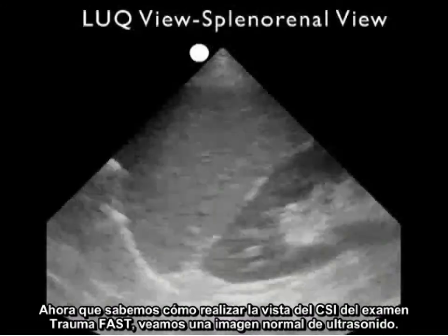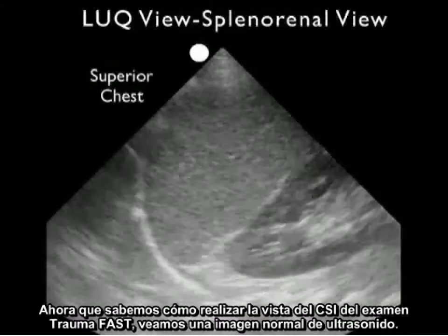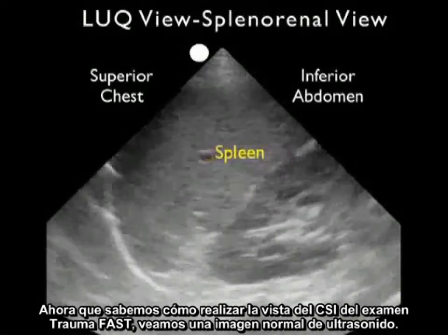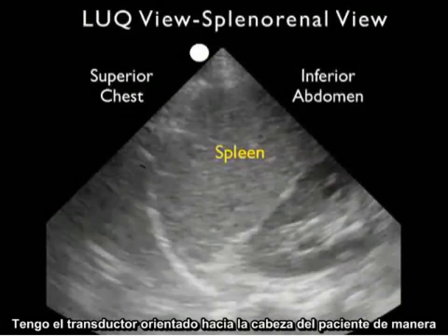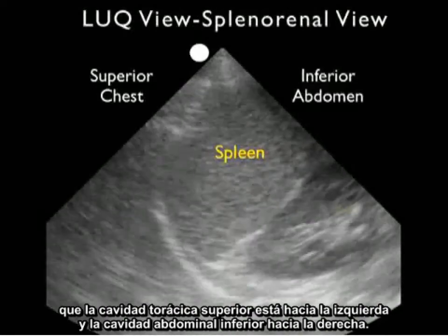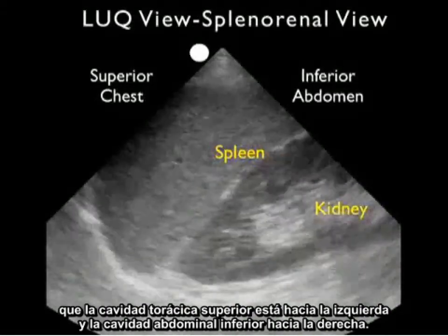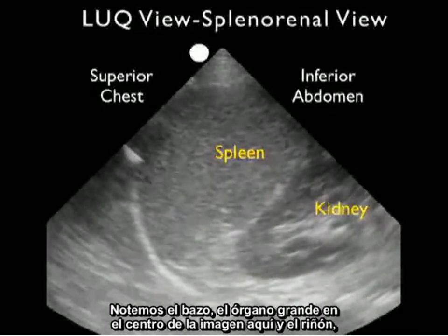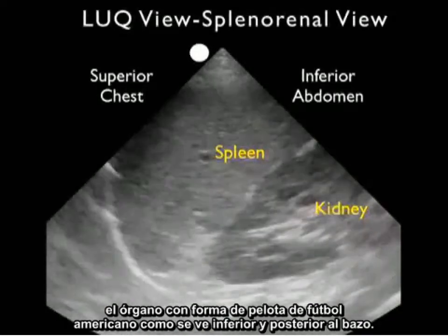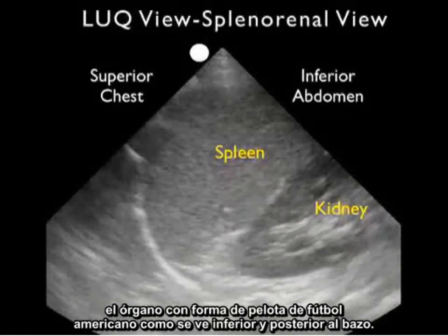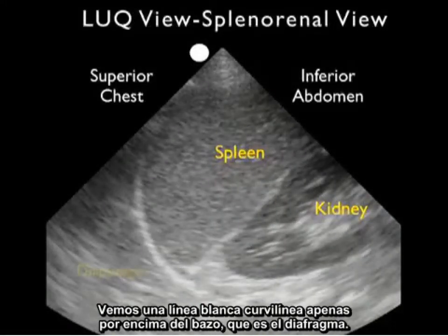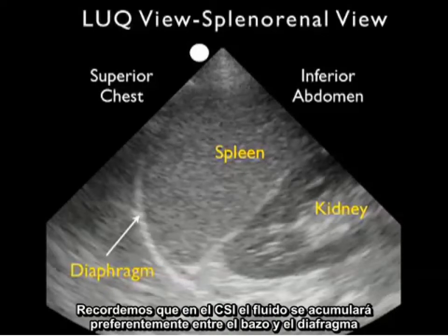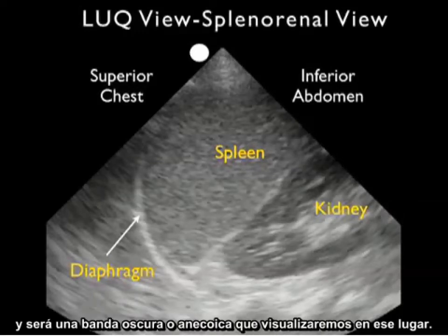Now let's take a look at a normal ultrasound image. I have the probe oriented towards the patient's head, so the superior chest cavity is towards the left and inferior abdominal cavity towards the right. Notice the spleen, the large organ in the middle of the image, and the kidney — the football-shaped organ seen inferior and posterior to the spleen. Notice the curving white line just above the spleen, which is the diaphragm. In the left upper quadrant, fluid will accumulate preferentially between the spleen and the diaphragm and will appear as a dark or anechoic stripe.